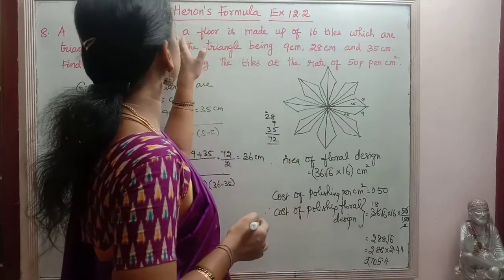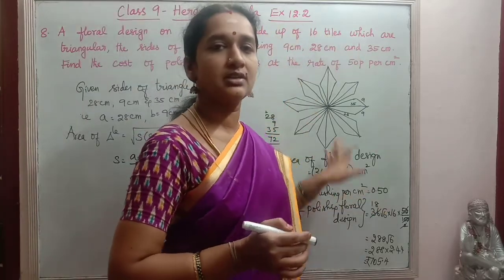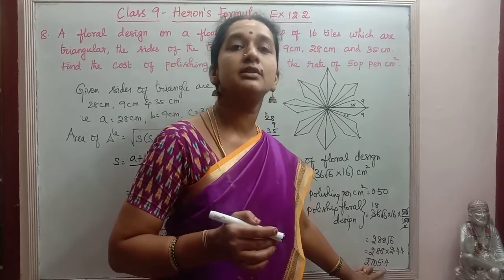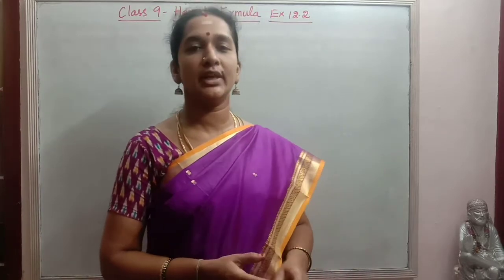705.4 rupees. So this is the cost of polishing the whole full floral design. That is 16 tiles design. Design made up of 16 tiles. So that is the floral design. So that is 705 rupees 40 paise. That is the total cost.